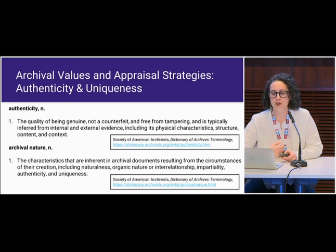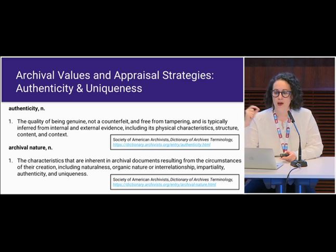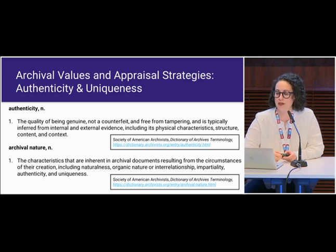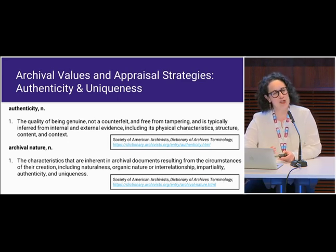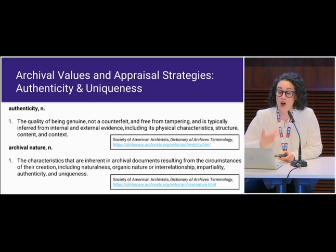Authenticity and uniqueness are values of archival records that both relate to creators. Authenticity is defined as the quality of being genuine, not a counterfeit, and free from tampering — typically inferred from internal and external evidence, including its physical characteristics, structure, content, and context. Uniqueness doesn't have its own definition in the SAA dictionary, but it is addressed within the entry for archival nature, which addresses context of creation. The origins of this concept are actually European, not American or Canadian.